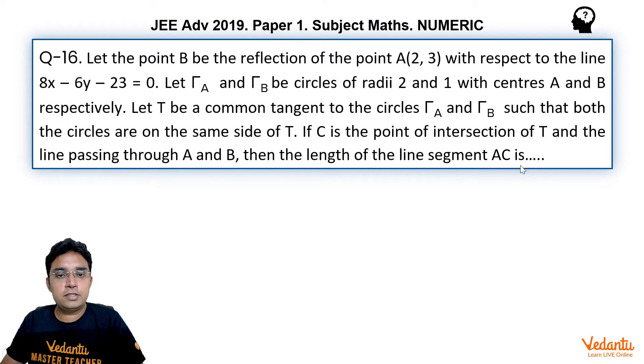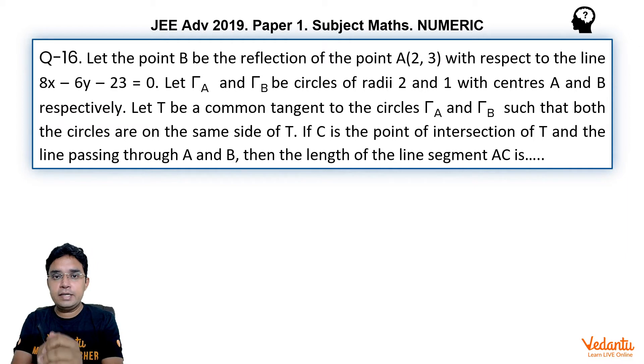I am presenting you the solutions of JEE Advanced 2019. This is question number 16 from paper 1. This question is taken from coordinate geometry. It includes concept of straight line and circles. One very interesting question but I think one of the easiest question of this paper. Let us see what this question is.